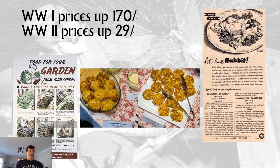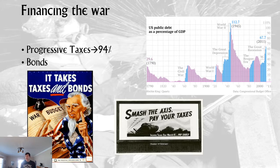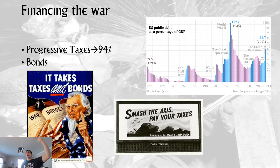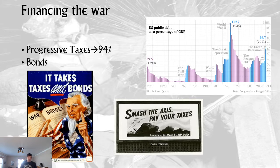Planting a victory garden, eating a rabbit — it worked. After the war there would be all this pent-up demand to buy goods. Unlike World War I, the US did a much better job paying for the war. The progressive income tax rate went up to 94% at the highest level. FDR proposed a 100% tax on very large incomes over $3 million a year, which really only affected about seven people in 1944. The debt went up significantly due to the war, then dropped dramatically.